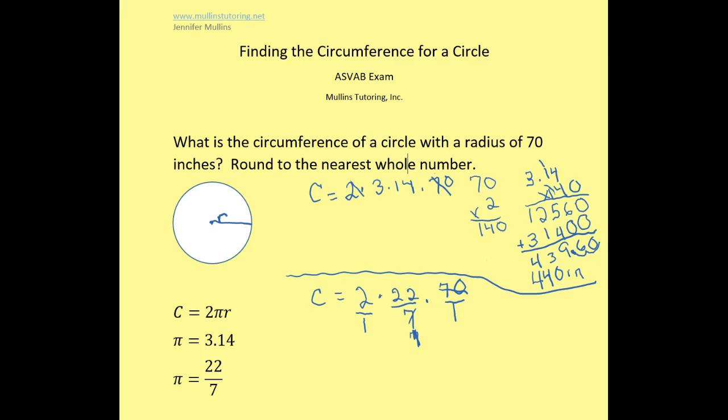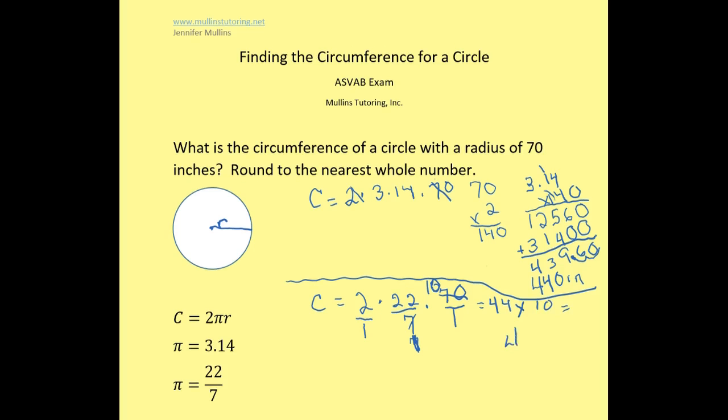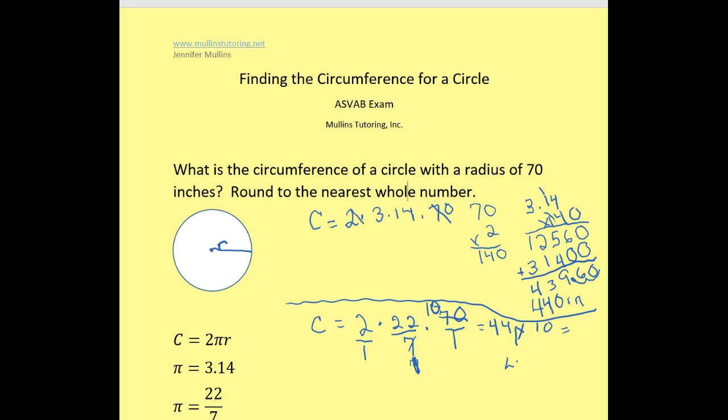So I'm going to divide both sides by 7. Sorry, this should be a 1. And this would be 10. So now I have all ones along the bottom, which means I no longer have a fraction. So I'm going to multiply 2 times 22, which is equal to 44, times 10, which is going to give me 440 inches.